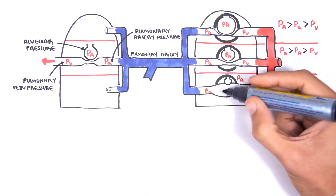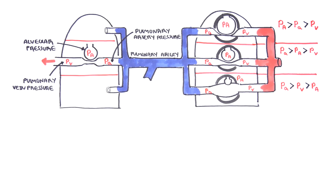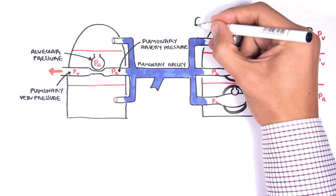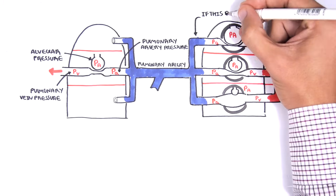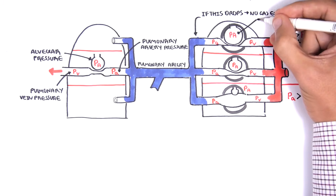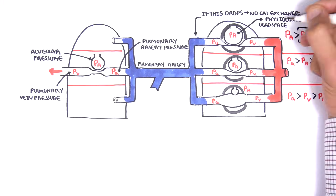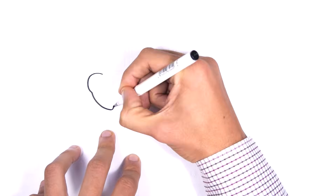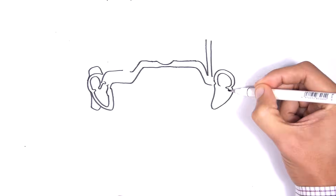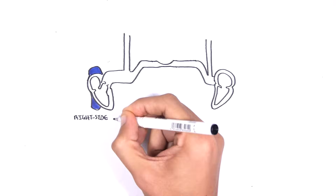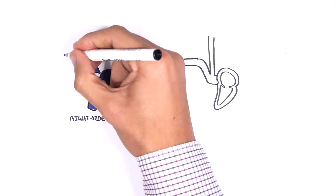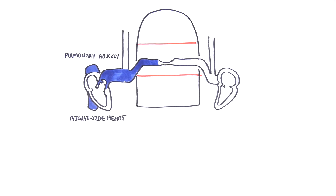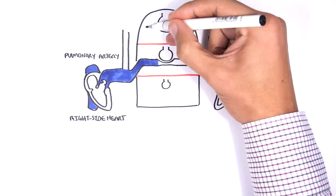Recapping the apex: focusing on the pulmonary artery pressure — if this drops, no gas exchange takes place and you thus have physiological dead space. Looking at the pulmonary blood flow in more detail: here is the right side of the heart, which pumps deoxygenated blood to the lungs. The lungs can be divided into three zones.